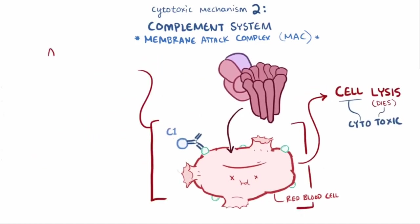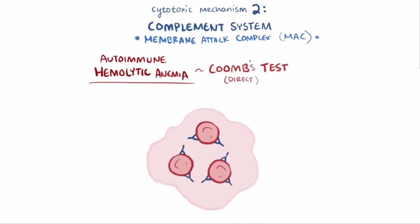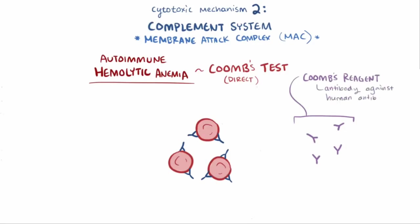In our example, if you suspect autoimmune hemolytic anemia, the antibody in question can be detected using a direct Coombs test. In the direct Coombs test, the person's red blood cells are separated from the plasma and then mixed with Coombs reagent, which is anti-human globulin — basically an antibody against human antibodies. If the red blood cells agglutinate, or clump up, that means they probably had antibodies on their surface.